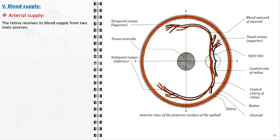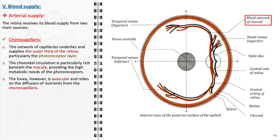The retina's arterial blood supply is derived from two primary sources: 1. The choriocapillaris: this dense network of capillaries is part of the choroid and is responsible for supplying the outer third of the retina, with a particular focus on the photoreceptor layer. The circulation provided by the choriocapillaris is abundant beneath the macula, catering to the high metabolic demands of the photoreceptors. Notably, the fovea within the macula is an avascular zone and depends exclusively on the diffusion of nutrients from the surrounding choriocapillaris.